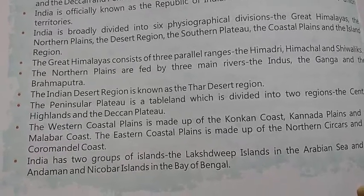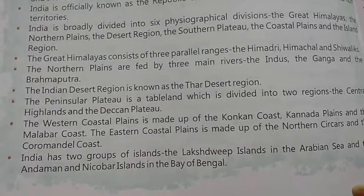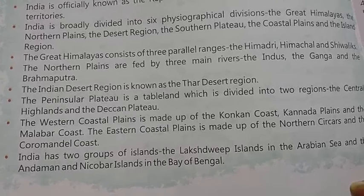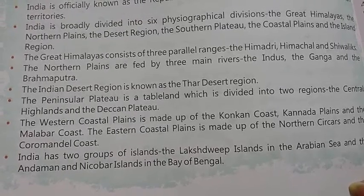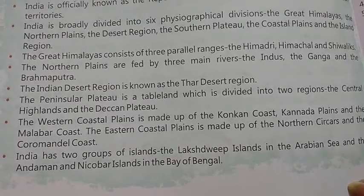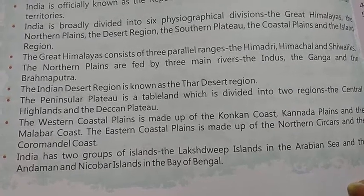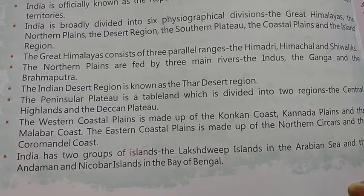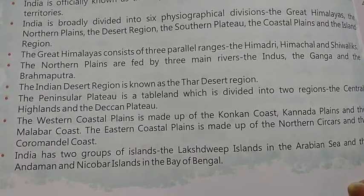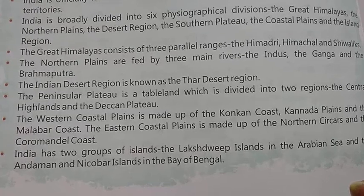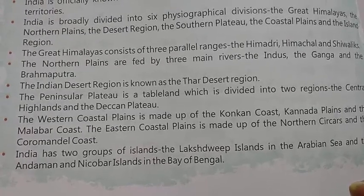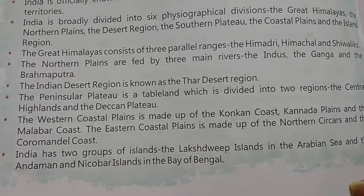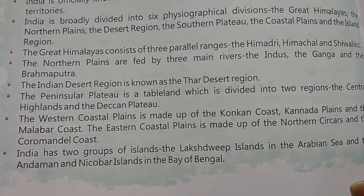The Great Himalayas consist of three parallel ranges: the Himadri, Himachal, and Shivaliks. The northern plains are fed by three main rivers: the Indus, the Ganga, and the Brahmaputra. Looking at the map, you can find these rivers and the Himalayan mountains, and the facts will become clear to you.